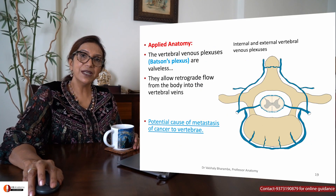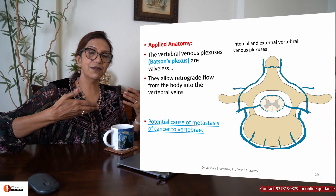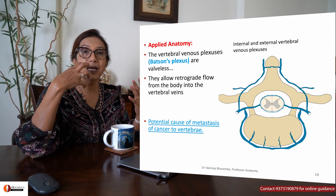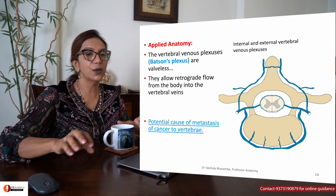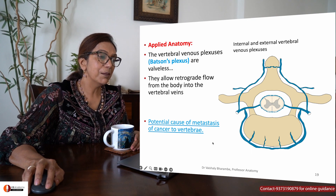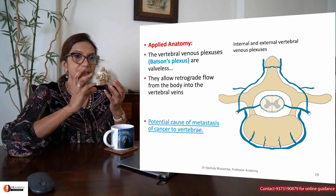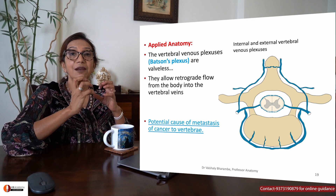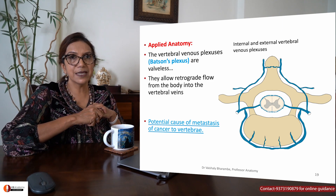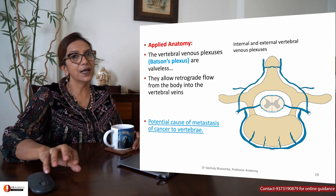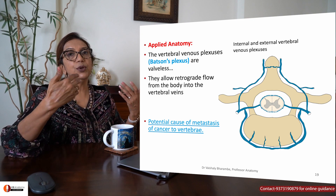This vertebral venous plexus consists of veins which have no valves. When there is a rise in abdominal pressure or cancer, increased abdominal pressure can push blood back into the vertebral region — this is the reason for metastasis of cancer to the vertebral column. This valveless system is known as Batson's venous plexus, consisting of internal and external venous plexuses draining into the inferior vena cava.